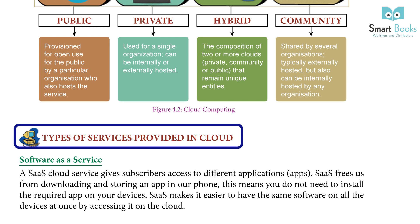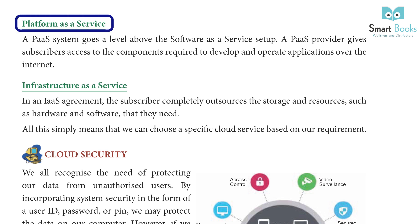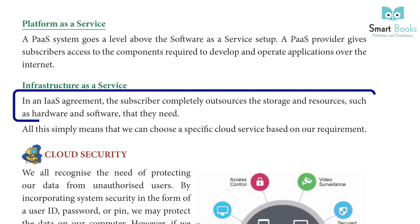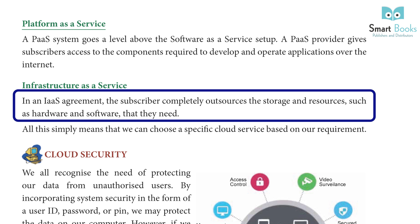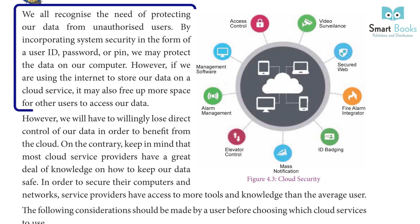Types of services provided in the cloud. Software as a Service (SaaS): A SaaS cloud service gives subscribers access to different application apps. SaaS frees us from downloading or storing an app on our phones — you do not need to install the required app on your devices. Platform as a Service (PaaS): A PaaS system goes a level above SaaS. A PaaS provider gives subscribers access to the components required to develop and operate applications over the internet. Infrastructure as a Service (IaaS): The subscriber completely outsources the storage and resources, such as hardware and software, that they need.